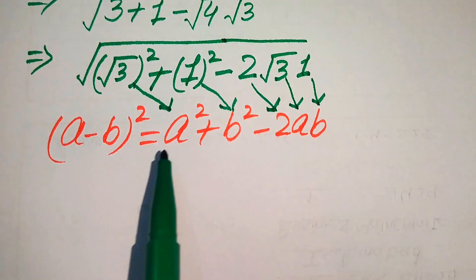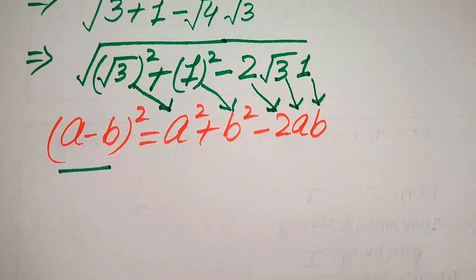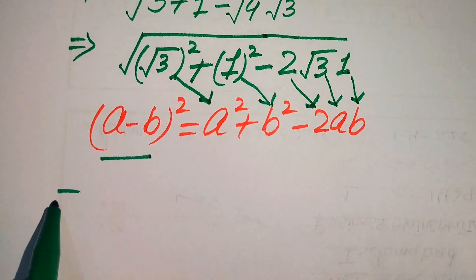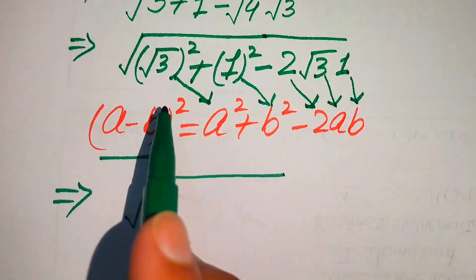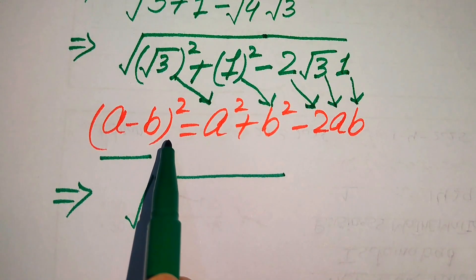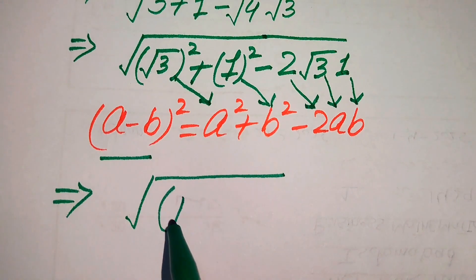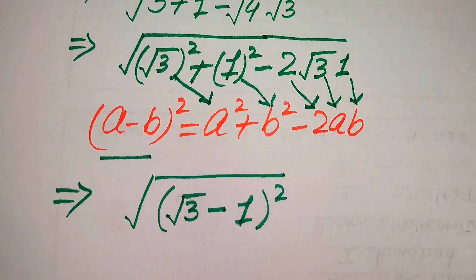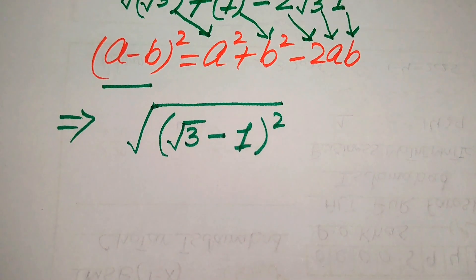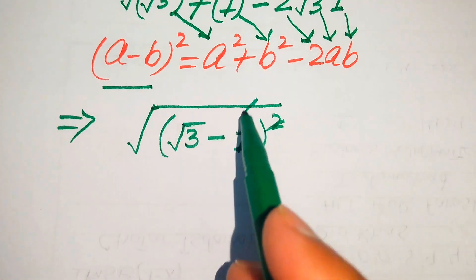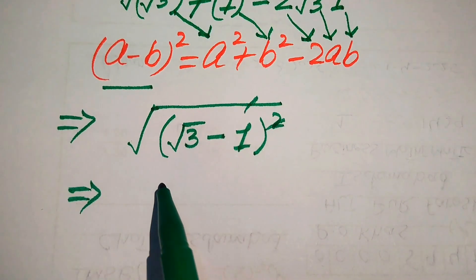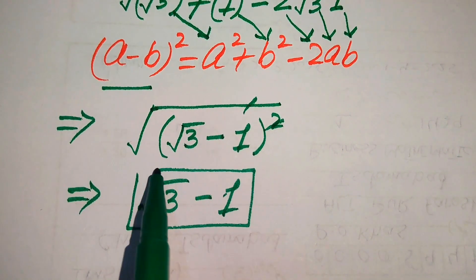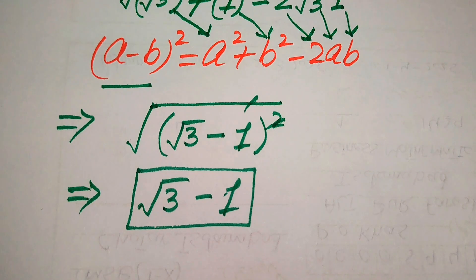When we compare the terms inside the square root sign and combine them, all of these terms form a perfect square. After combining, the expression inside the square root becomes (√3 − 1)², so the whole square root simplifies to √3 − 1.